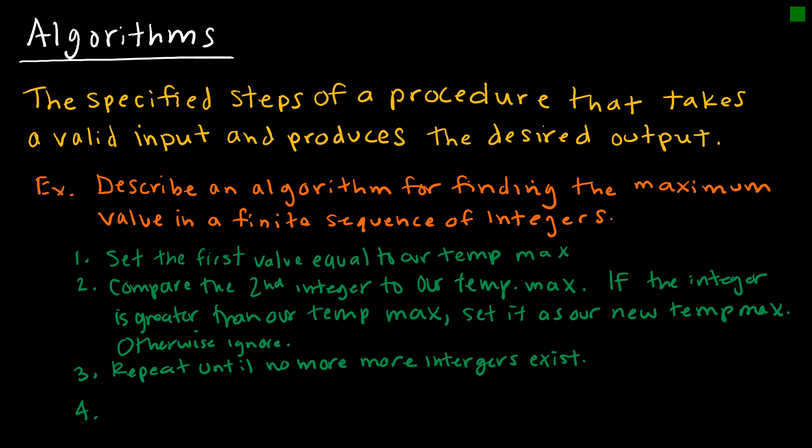So our last step is basically just telling us how do we know what the maximum is. So when the process is over, when the algorithm terminates, and it terminates when we run out of numbers, the temporary max is the maximum integer. So this is an example of an algorithm that finds the maximum value in a finite sequence of integers. Obviously, there is no value if it's an infinite sequence of integers.